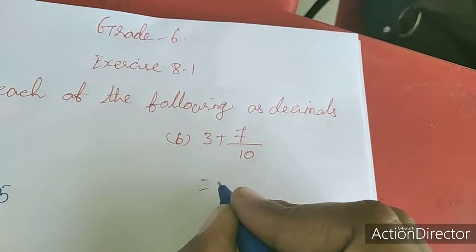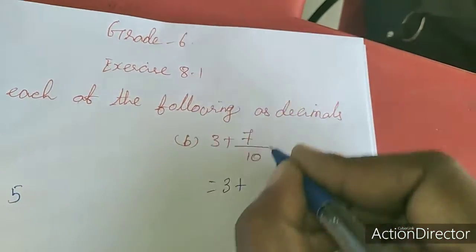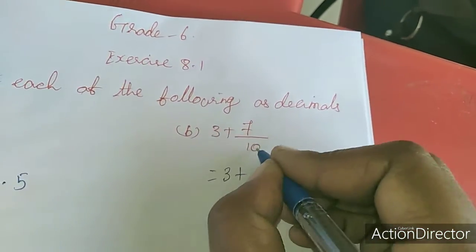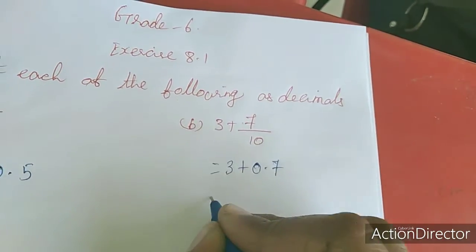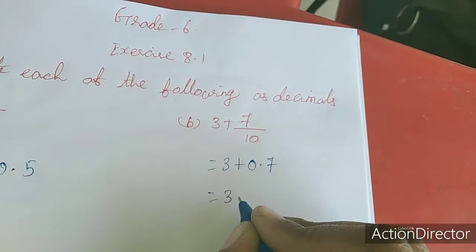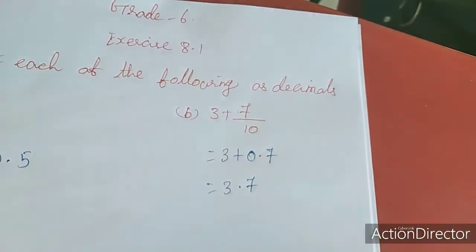Next paharunga, 3 is a whole number, so the whole number remains the same. 7 by 10 means one digit before dot, so 0.7. Whole number plus decimal, so it's 3.7.